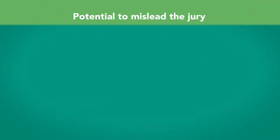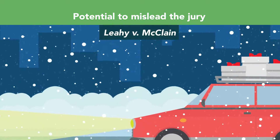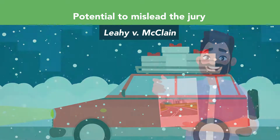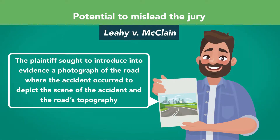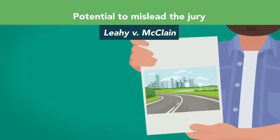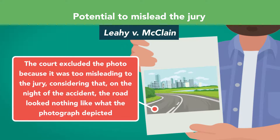The first ground to exclude under Rule 403 is potential to mislead the jury. Leahy v. McLean involved the question of liability for a car accident that occurred during a snowy winter night with low visibility. In his negligence lawsuit, the plaintiff sought to introduce a photograph of the road where the accident occurred to depict the scene and the road's topography. However, the photograph was taken during the daytime in July and didn't fairly depict the visibility at the time of the accident. The court excluded the photo because it was too misleading to the jury, considering that on the night of the accident, the road looked nothing like what the photograph depicted.